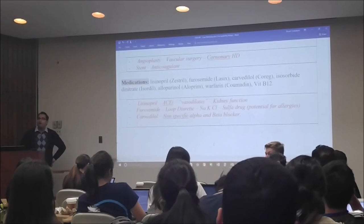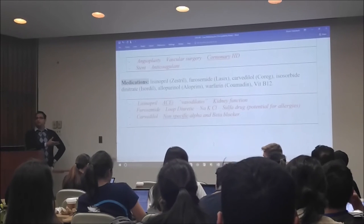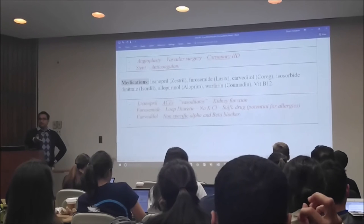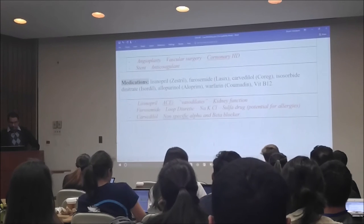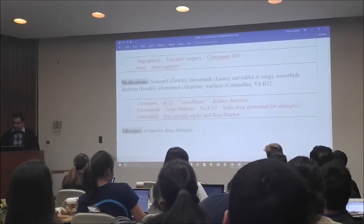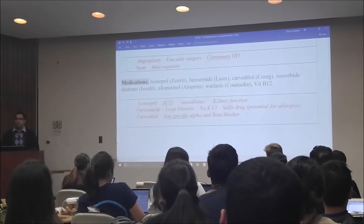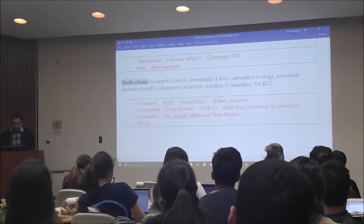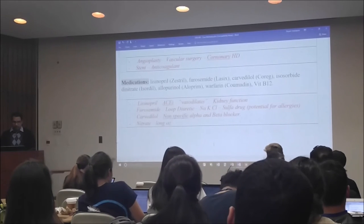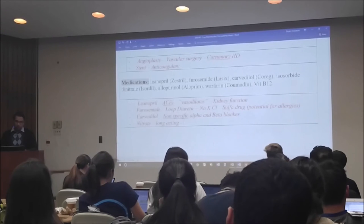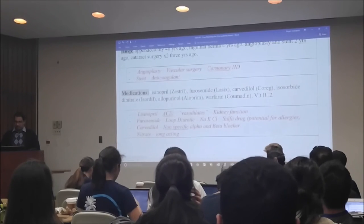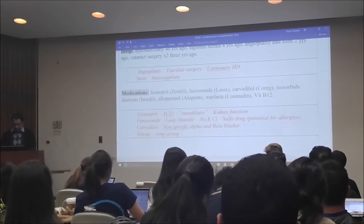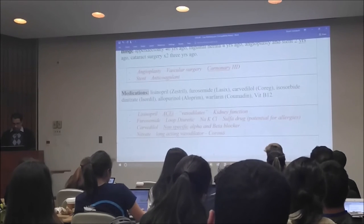Why is that relevant? That's the reason why he has heart failure — uncontrolled hypertension is one of the things that leads into heart failure. Isosorbide dinitrate — nitrates for chest pain. This is the long-acting nitrate, used for his coronary heart disease. It's a long-acting vasodilator.